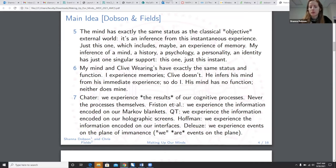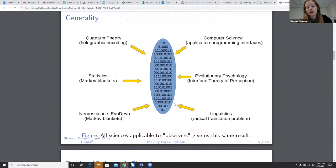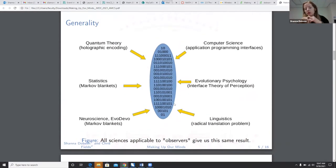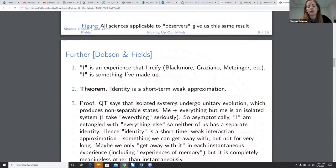Chater says we experience the results of our cognitive processes, never the processes themselves. Friston et al say we experience the information encoded on our Markov blankets. Quantum theory says we experience information encoded on our holographic screens. Hoffman says we experience information encoded on our interfaces. Deleuze says we experience events on the plane of immanence itself. We are the events on the plane. So all sciences applicable to observers literally give us the same result. You have an experience encoded on a boundary.